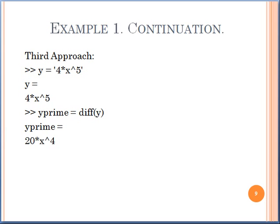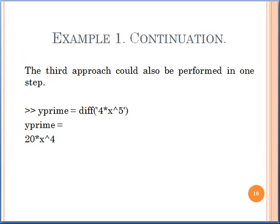The third approach: if you do not want to define variable X in a separate command, then simply use apostrophes while defining Y. Then also you can get the output. The conclusion from the second and third approach is that we can get the result directly in one step — define Y prime equal to DIFF, and in the bracket use apostrophes around the Y function. Then also you can get the answer.